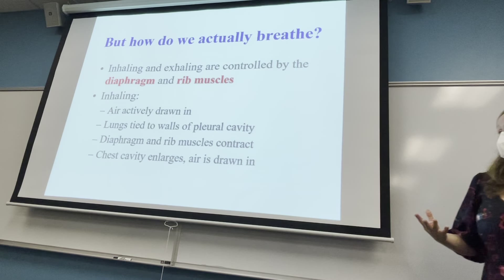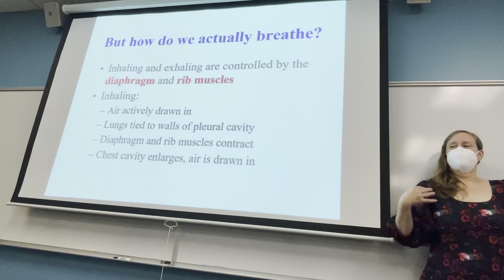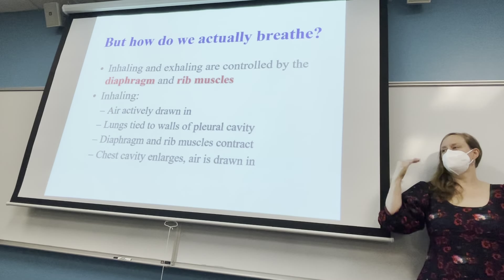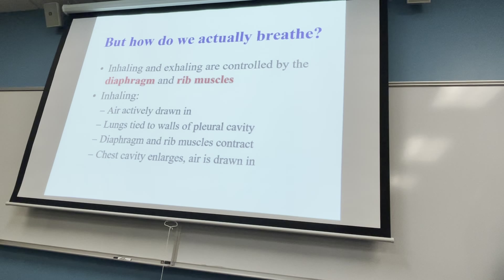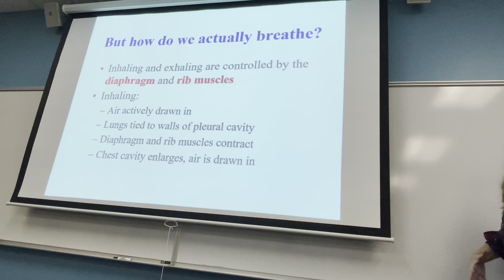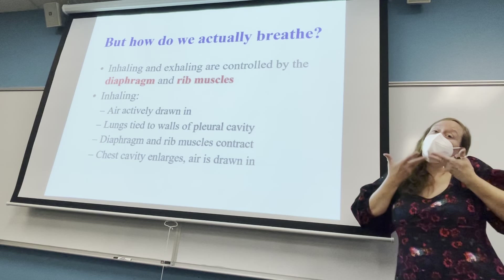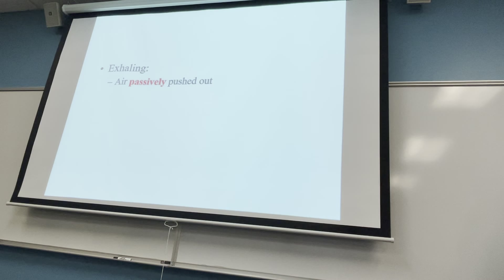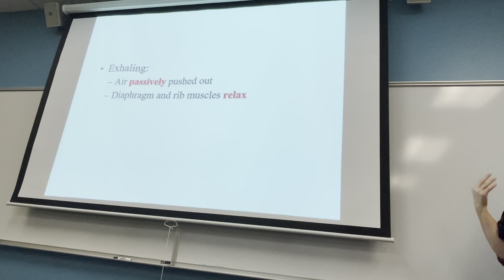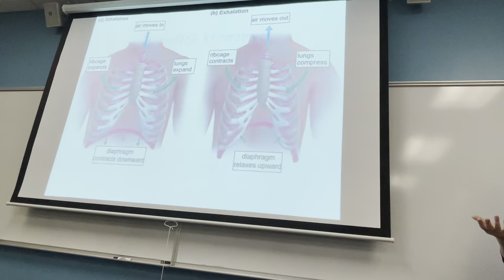That's why when you're anxious, they tell you to take a deep breath — more oxygen gets into your body and your efficient processes work better, helping you relax. When you exhale, the ribs and diaphragm relax and go back into place, essentially squishing the lungs and pushing air out. This exhalation is passive activity because your muscles are relaxing and naturally forcing the air out. Deep breathing gets more oxygen in and more carbon dioxide out.